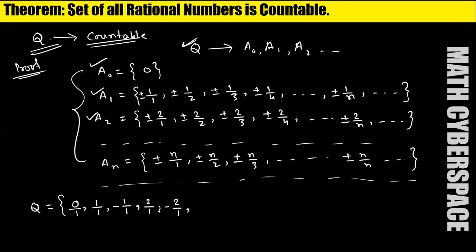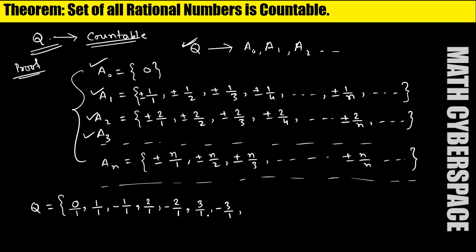Now increase the denominator: 2/2 and −2/2 — but 2/2 equals 1 and −2/2 equals −1, which I have already taken, so I am deleting them. Increase the numerator again: 3/1 and −3/1, which are elements of A3. Then 3/2 and −3/2. Then 3/3 and −3/3 — but 3/3 equals 1 and −3/3 equals −1, so I am deleting these two elements.